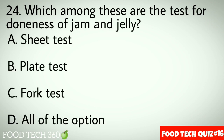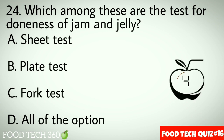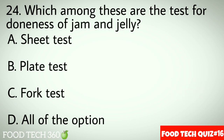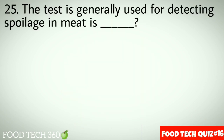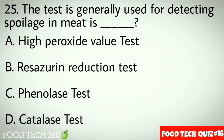Question No.24: Which among these are the tests for doneness of jam and jelly? Options A: Sheet test. B: Plate test. C: Fork test. D: All of the options. Correct answer D: All of the options.